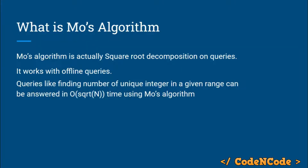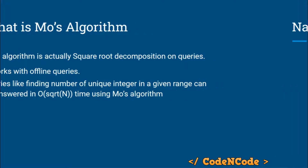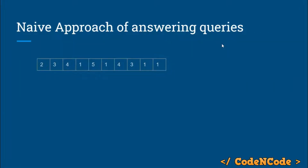Mo's algorithm can be used to solve questions like finding the number of unique integers in a given range in square root of N time. That is for a single query. So if there are Q queries then the overall time complexity would be Q into square root of N.